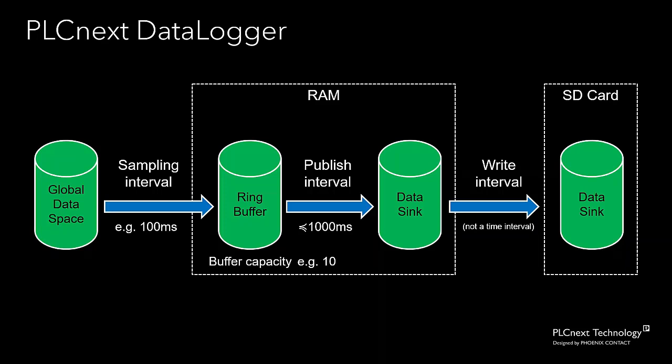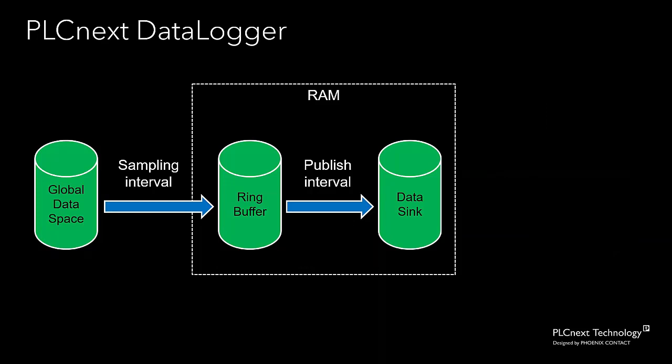The data logger described here is called a database type data logger, where the data ends up in a data sync on the SD card in persistent memory. There's a second type called a volatile data logger. In that case, we simply omit the final step and data just ends up in the in-memory data sync in RAM. We can retrieve data from that in-memory data sync using an RSC service in the PLCnext runtime. Of course, when the PLCnext runtime shuts down or the PLC reboots, that data will be lost.